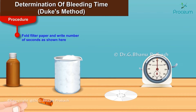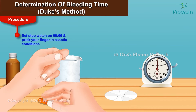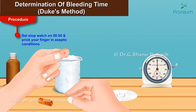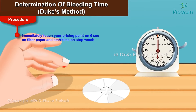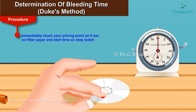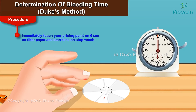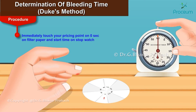Set the stopwatch on 0 and prick your finger under aseptic conditions. Immediately touch your pricking point on the finger on 0 seconds of the filter paper and start the stopwatch.